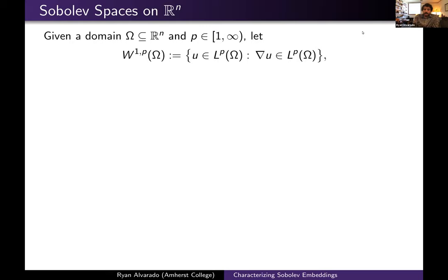Recall that if you have a domain omega and some exponent bigger than or equal to one, we define the first order Sobolev space W^{1,p} on omega as a collection of all functions U belonging to the Lebesgue space L^p with the property that their gradient, taken in the sense of distributions, is also in L^p.